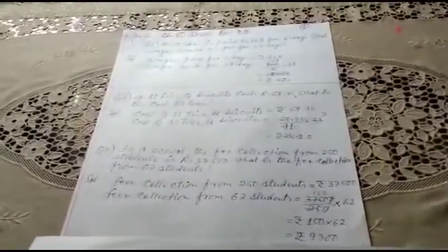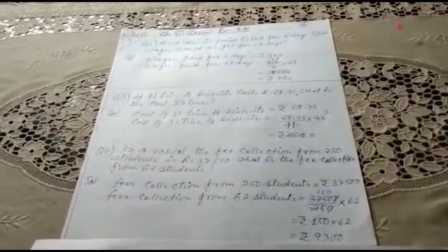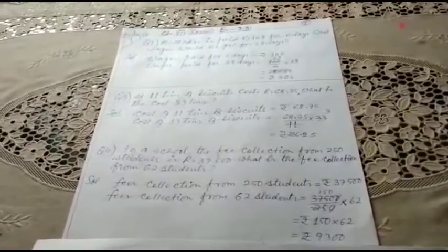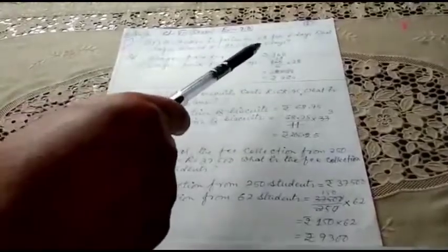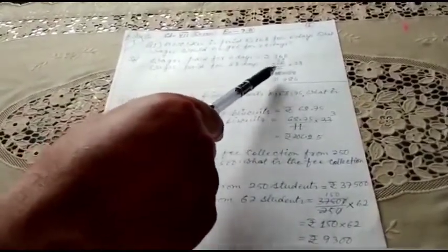Now children, for unitary method question: a worker is paid rupees 168 for six days. What are the wages he would get for 28 days? Let's start the solution. This is a unitary method question. Wages paid for six days equals 168. Wages paid for 28 days: 168 by 6—it is for one day.